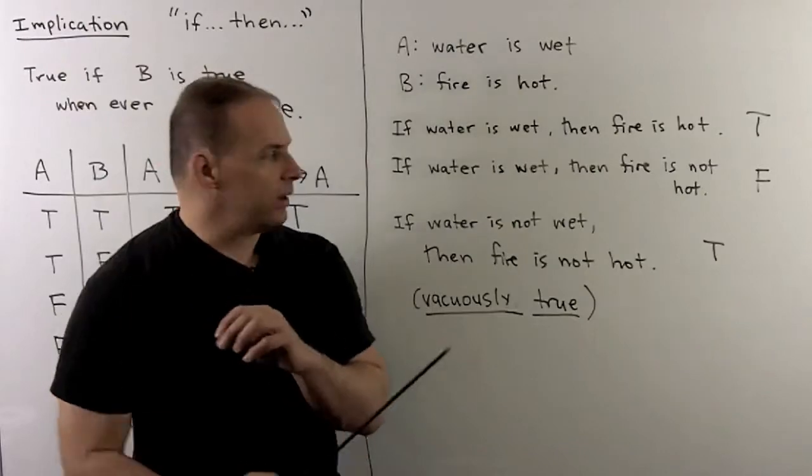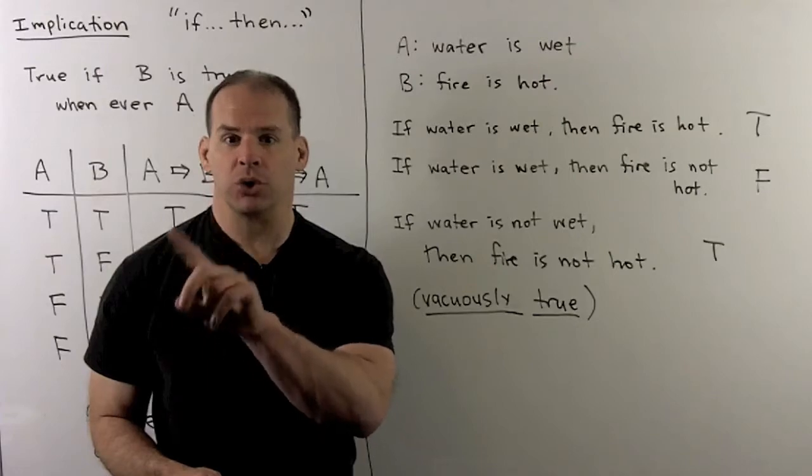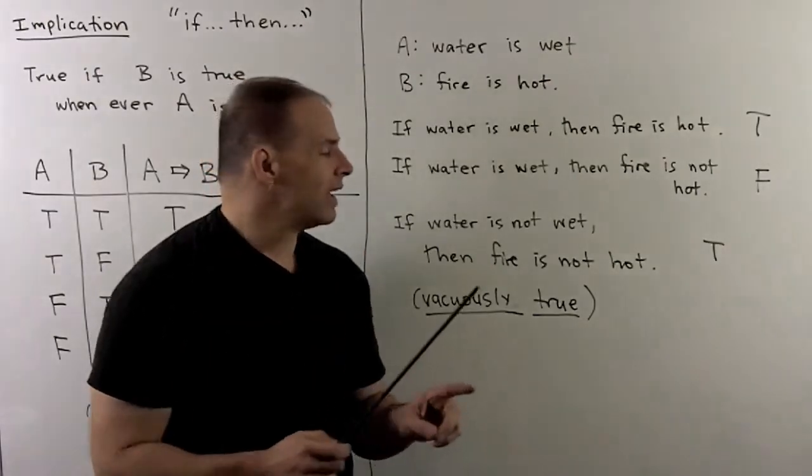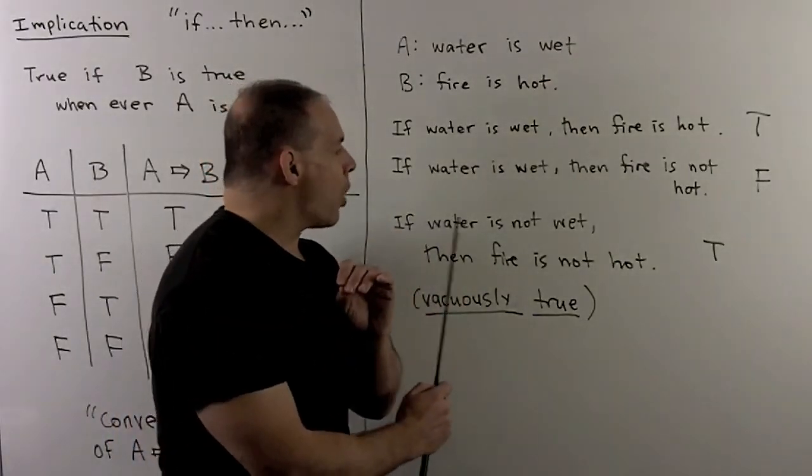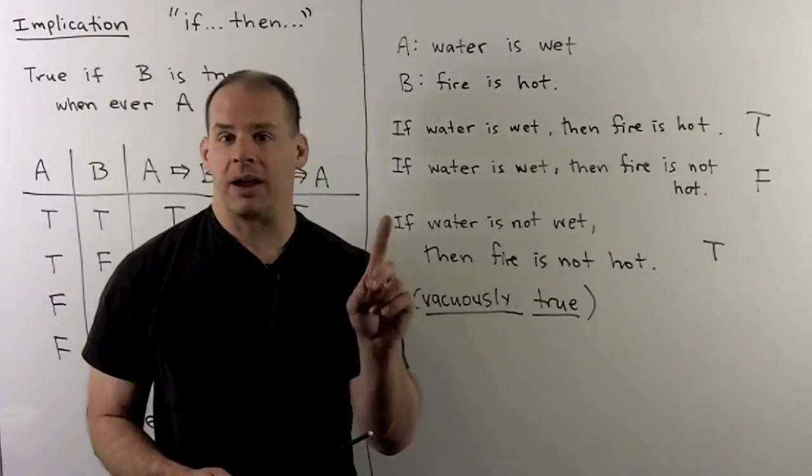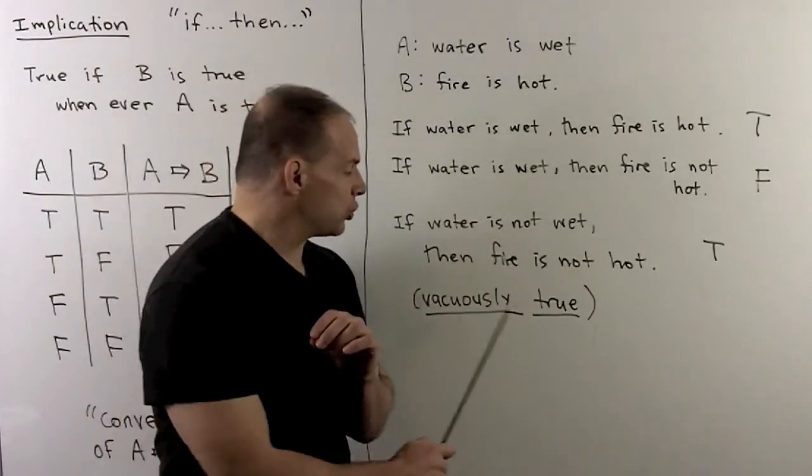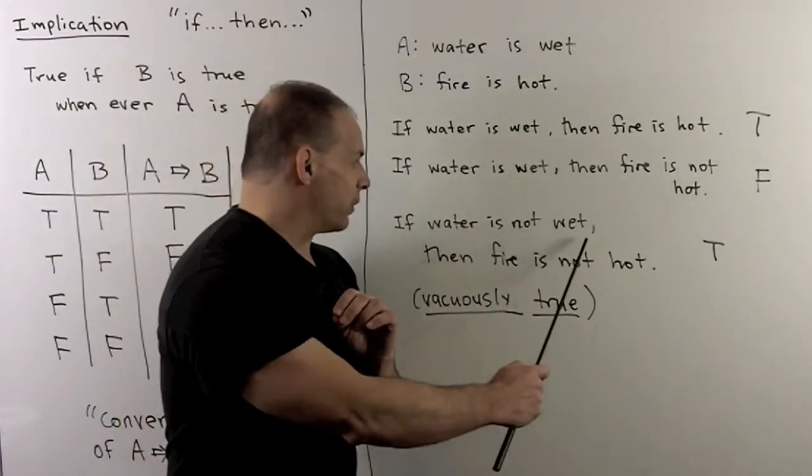If I try, if water is wet, then fire is not hot, that's a false statement. We have a true implying a false. Then, if I try, if water is not wet, then fire is not hot. I have a false implying a false. So, that's a true statement. And of course, it's vacuously true because we never get past the first statement.